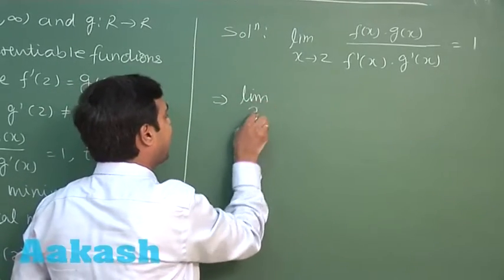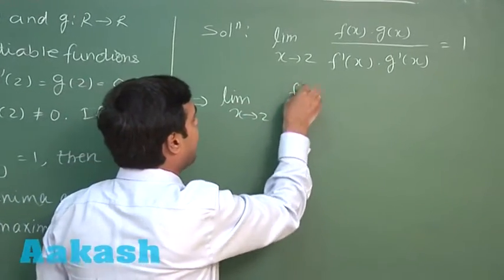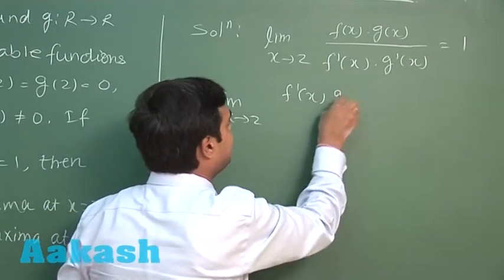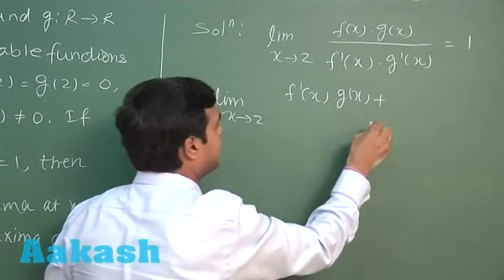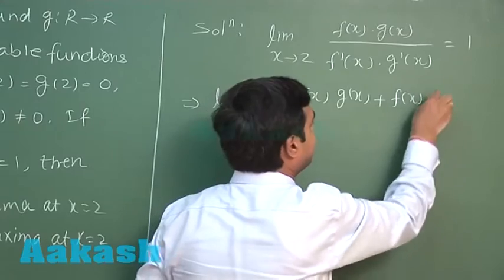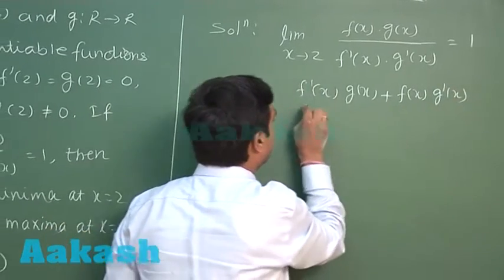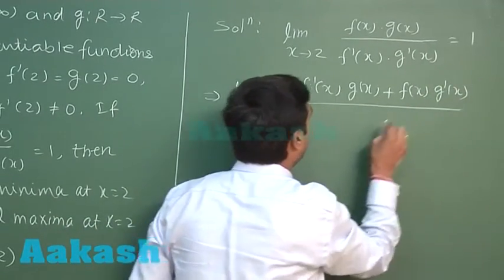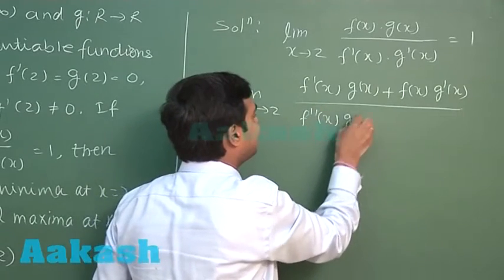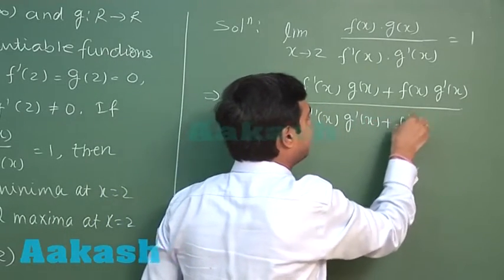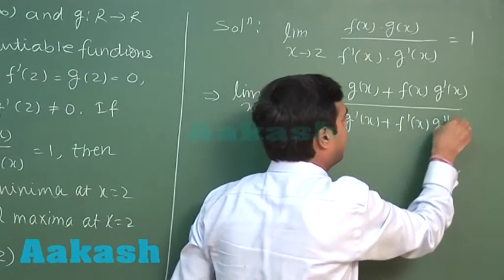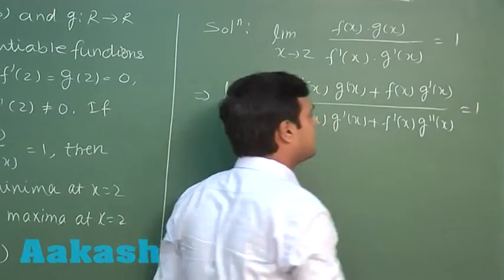So this gives me limit x approaching to 2, f dash x g(x) plus f(x) g dash x, divided by f double dash x g dash x plus f dash x g double dash x equals 1.